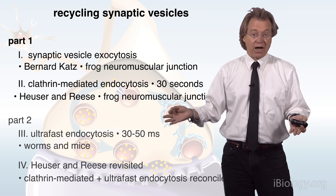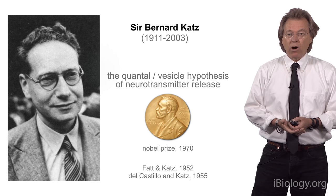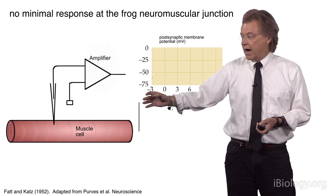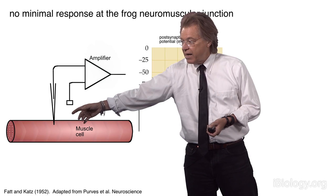This work all relied on Bernard Katz, who was working in the 50s and 60s — work that won him the Nobel Prize. What he was doing was recording from the frog sartorius muscle. He had a sharp electrode penetrating the muscle cell, and he could record changes in the potential of that muscle cell. As long as there were no changes, the potential was constant at about minus 60 millivolts.